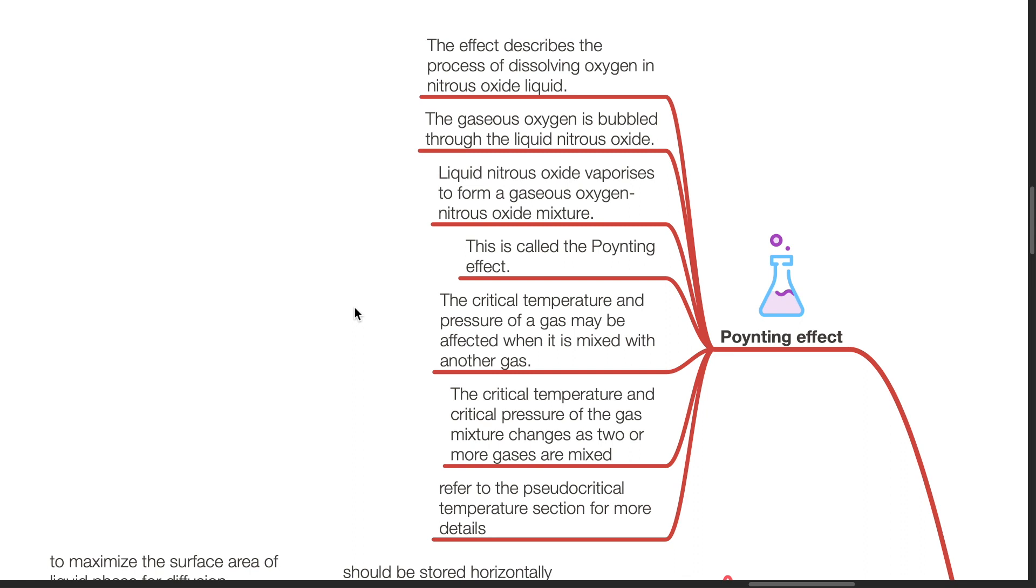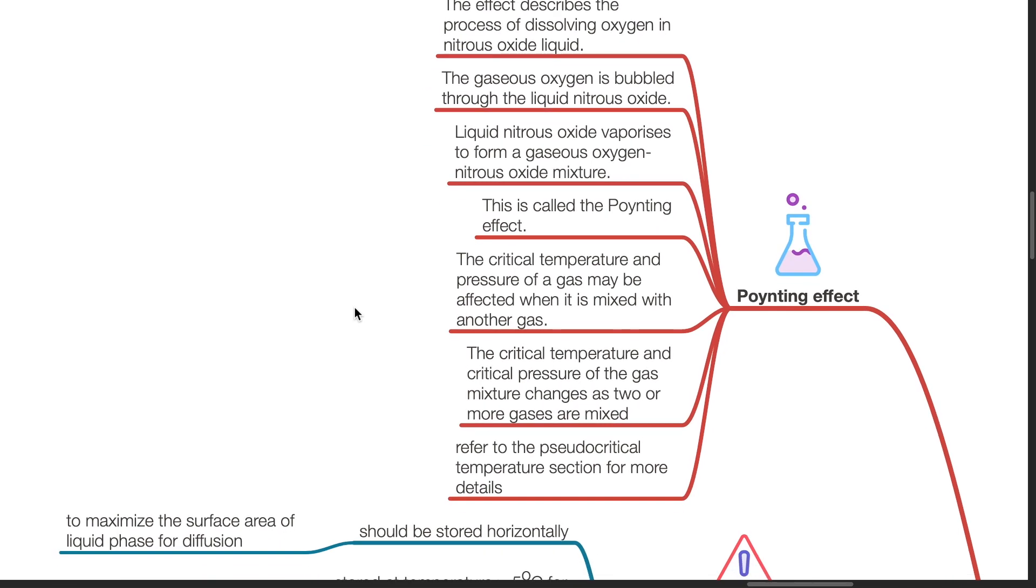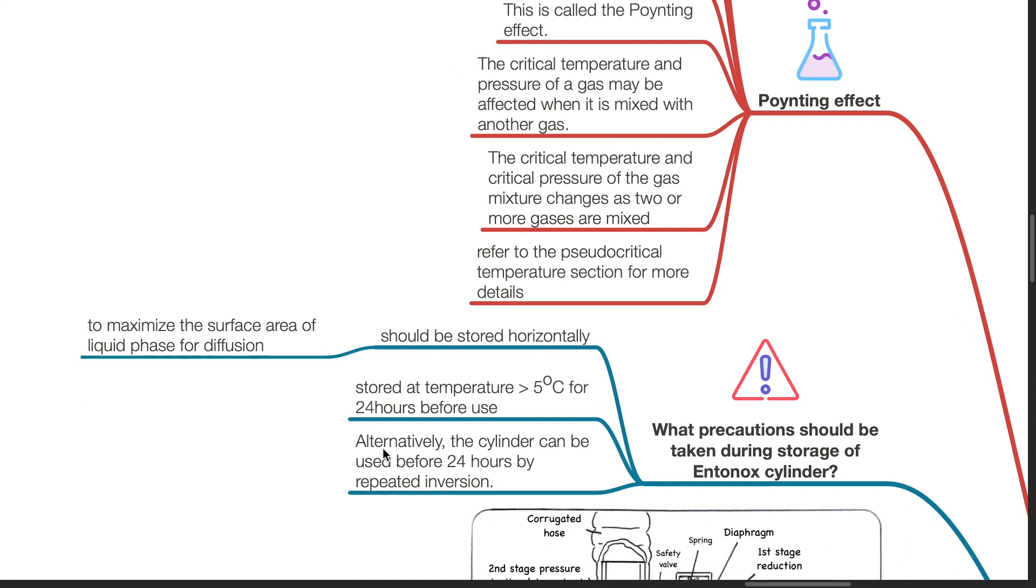The critical temperature and pressure of a gas may be affected when it is mixed with another gas. The critical temperature and critical pressure of the gas mixture changes as two or more gases are mixed. Refer to the pseudo-critical temperature section for more details.